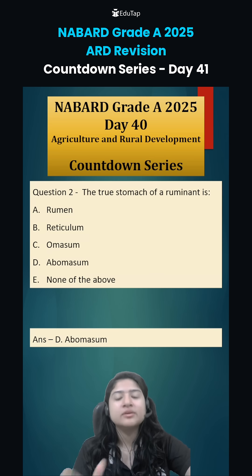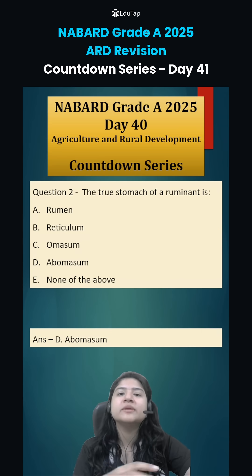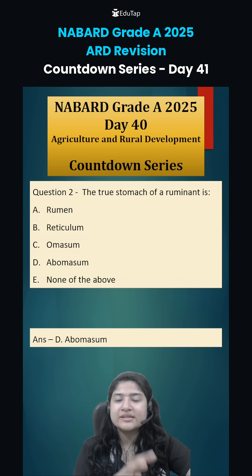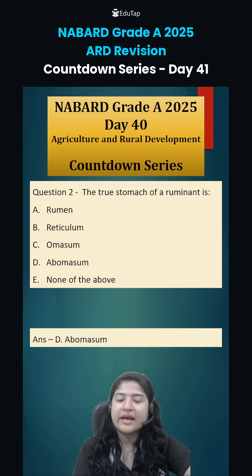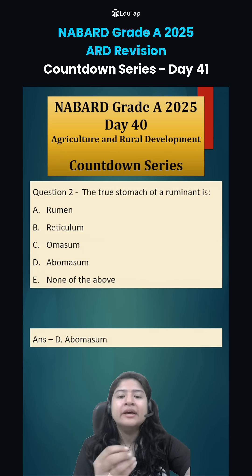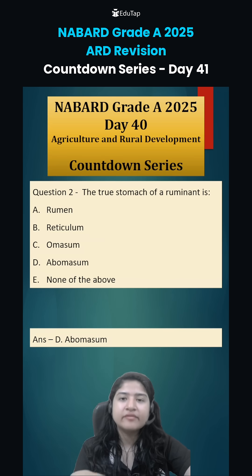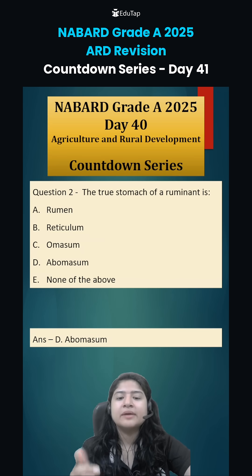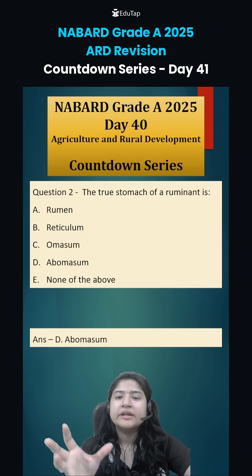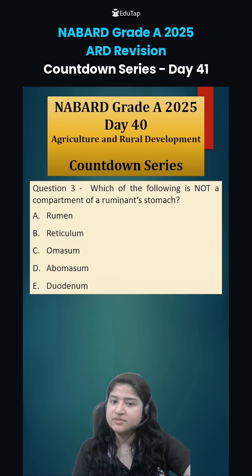In the rumen, only a partial breakdown of food occurs through cellulose fermentation — it is not the complete chemical process. The reticulum acts as a chamber where filtering out of foreign particles happens. After that, the omasum absorbs water. So the actual chemical decomposition of food happens in the abomasum.